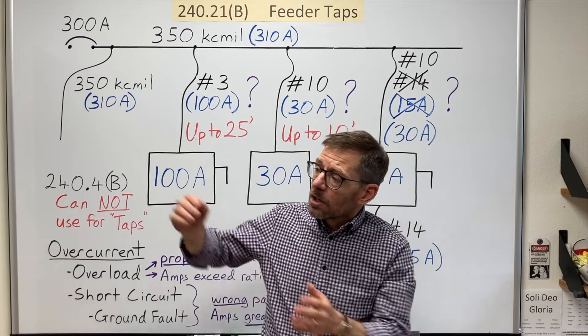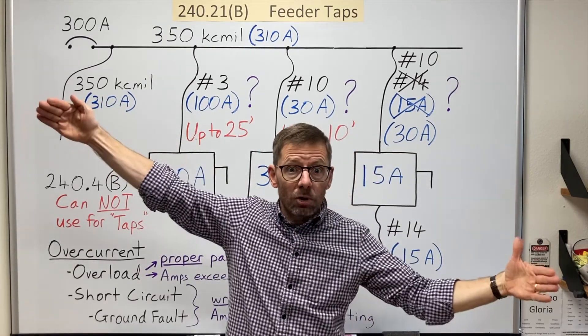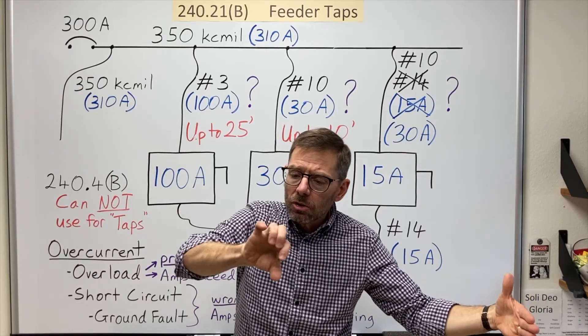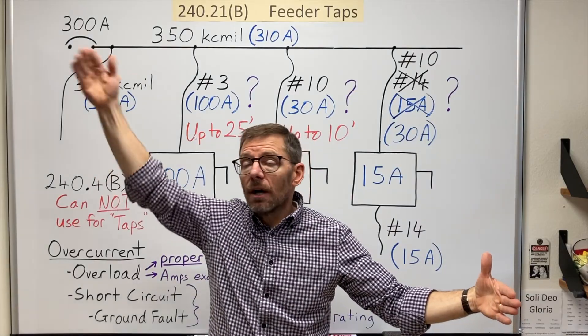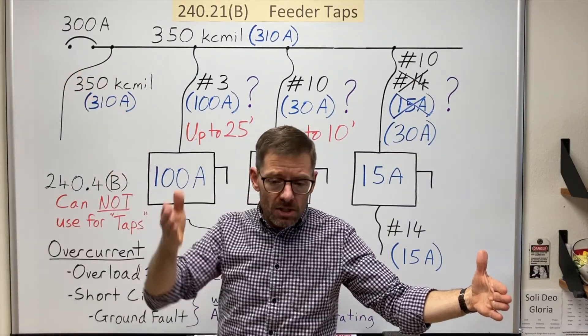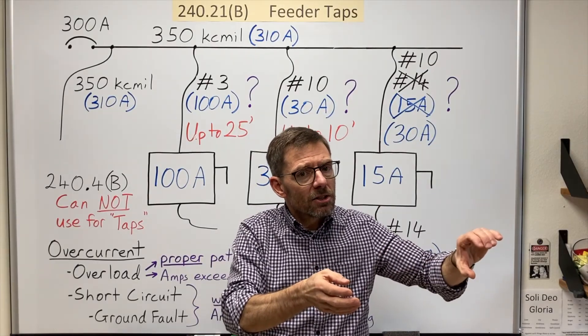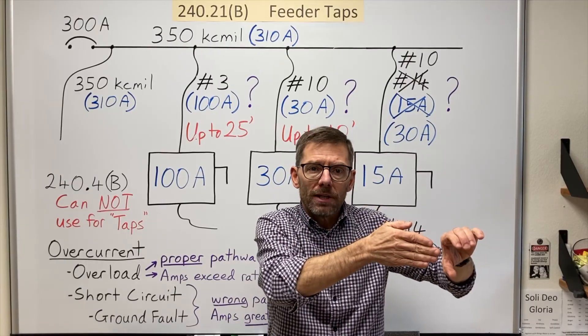Three deals with transformers. As long as the primary and secondary conductor's total length is not over 25 feet. You can have a primary conductor that is at least one third of the upstream device. Still has to carry the load of the transformer. And then the secondary conductors, you have to use the transformer ratio to find out the equivalent amperage.